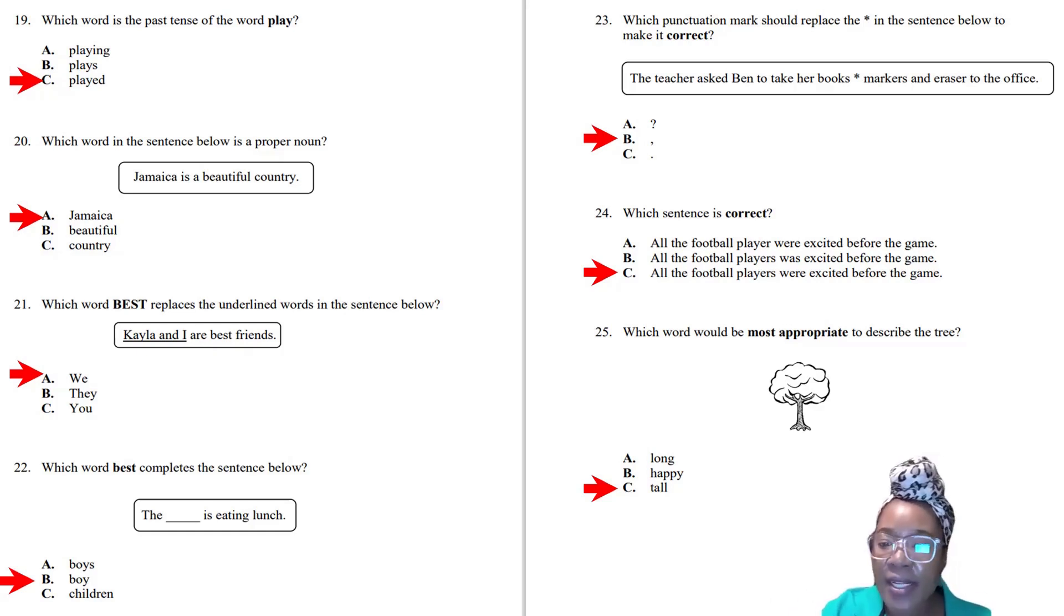For past tense, you add E-D, but some words you have to change because they're irregular. For regular words, you just add E-D. The answer is played. Number twenty: Which word in that sentence is a proper noun? Jamaica is a beautiful country. Jamaica, that's the proper noun.